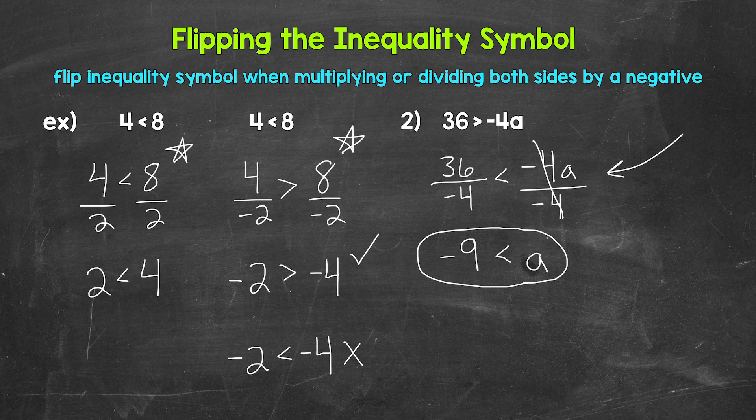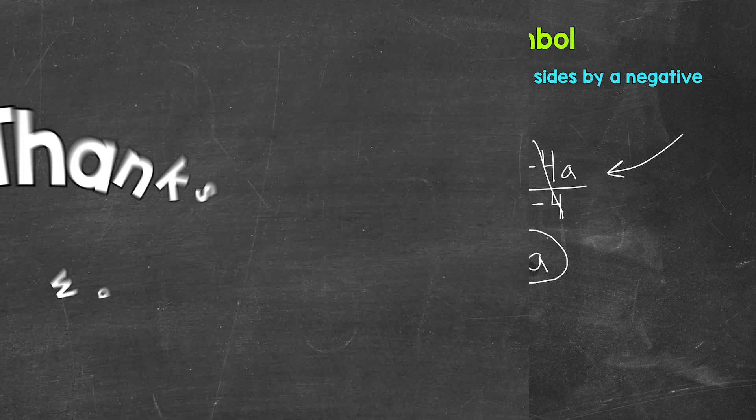If you forget to flip the symbol, when you go to check a solution you'll notice it won't work, so it's important to check and catch that mistake. Just remember: flip the inequality symbol when multiplying or dividing both sides by a negative. There's how to solve one-step multiplication inequalities — I hope that helped. Thanks so much for watching. Until next time, peace.